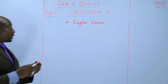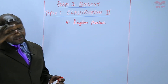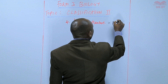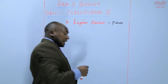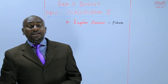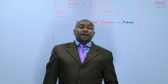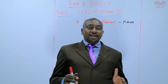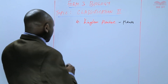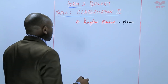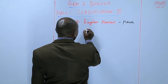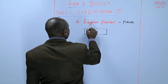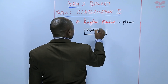Now, in Kingdom Plantae, this is where we have all the different categories of plants. Before we look at the specific plants that we have in Kingdom Plantae, it is important to have a summary of the entire kingdom. We'll have a flowchart diagram, and that is the main kingdom, which is Kingdom Plantae.